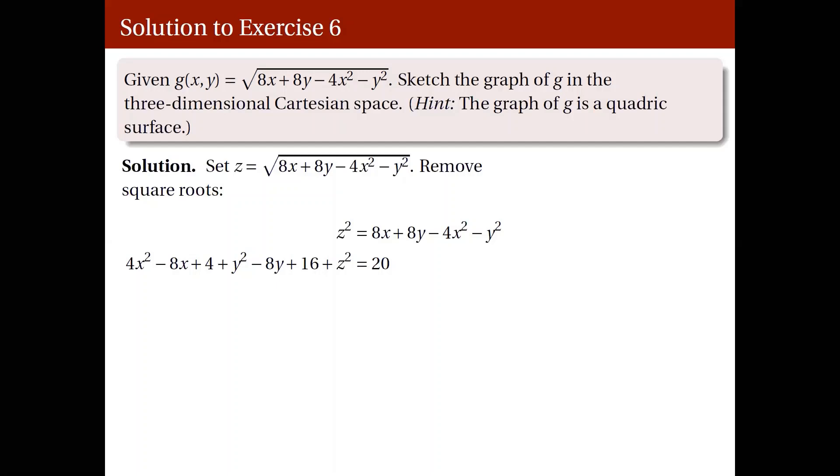So you may refer to the previous item for a reason why the left-hand side looks like this and why there's 20. And finally, we divide everything by 20 to obtain an equation with 1 on the right-hand side. And on the left, we get this sum of squares.